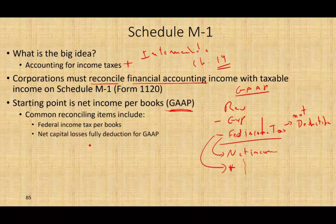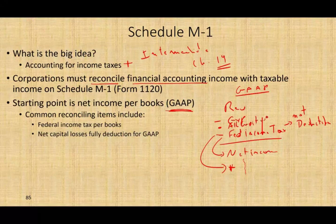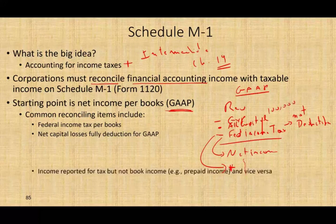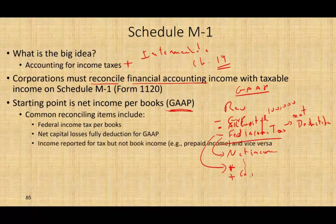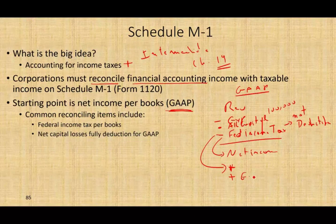Another item is net capital losses, which are fully deductible for GAAP. When computing revenue minus expenses for GAAP, you can deduct all your capital losses. But for tax purposes, capital losses can only offset capital gains, and any excess cannot be used. So if you have excess capital losses — say $100,000 — those are not deductible for tax purposes and you have to add back the excess capital losses.